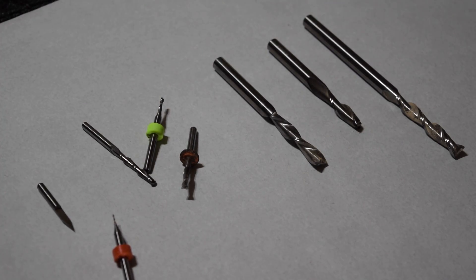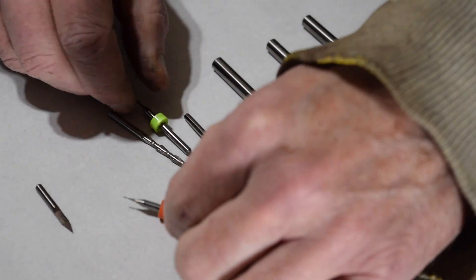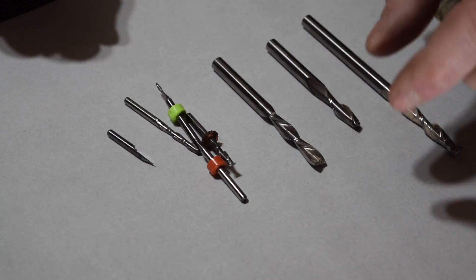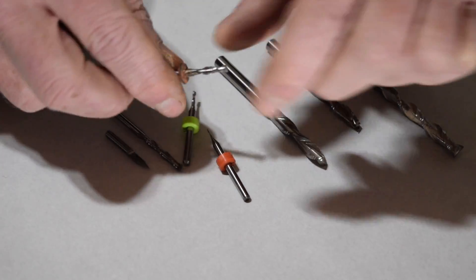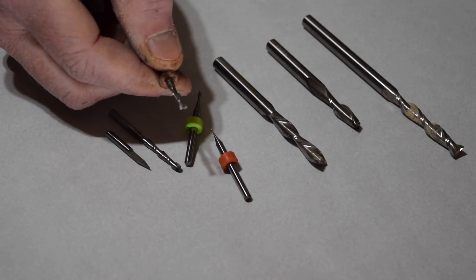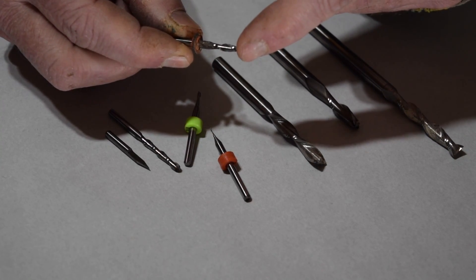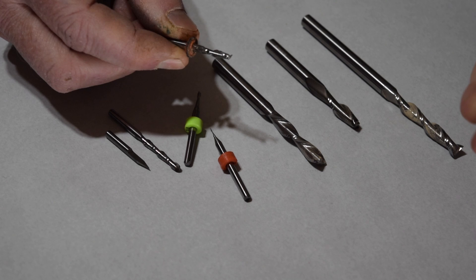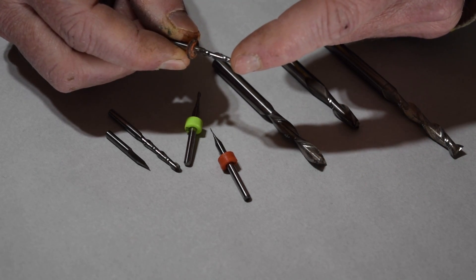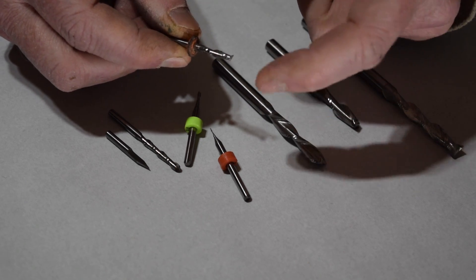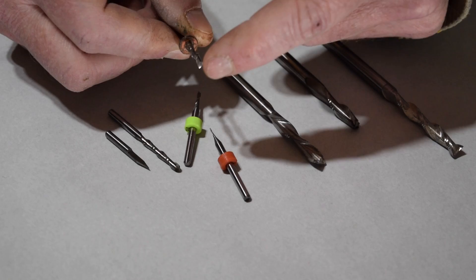And these bits are all eighth inch shank bits. And what I have here this is an eighth inch diameter two flute spiral upcut bit. And I typically use this for cutting for example a truss rod slot or if I need to drill any holes that are larger than an eighth of an inch in diameter I'll use this bit. And this has a flat end.